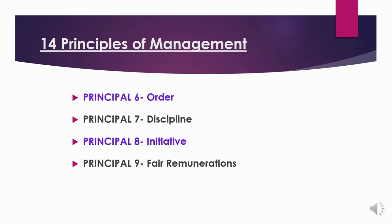The ninth principle is fair remuneration. The quantum and method of remuneration paid to workers should be fair, reasonable, satisfactory, and rewarding towards employees' efforts. Fair remuneration accords satisfaction to both employees and employers. Wages should be determined based on cost of living, work assigned, financial position of the business, and prevailing wage rates. Appropriate wage rates should reduce tension between workers and management. Fayol also recommended provisions such as free education, free medical facilities, and free residential facilities for employees.